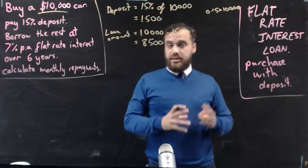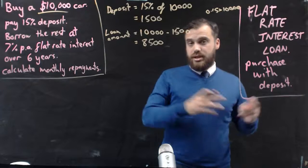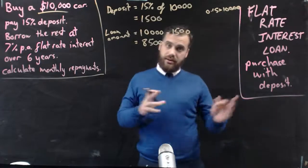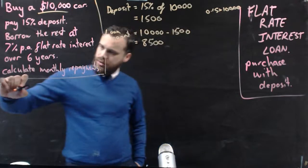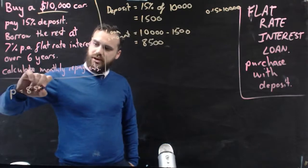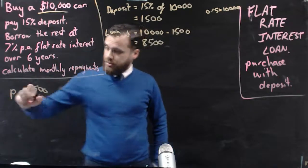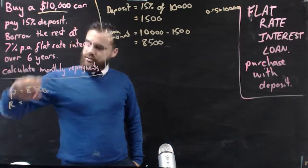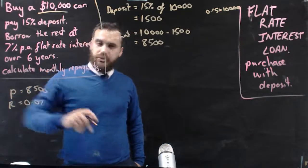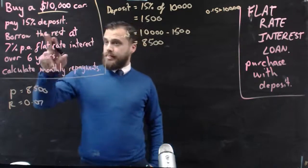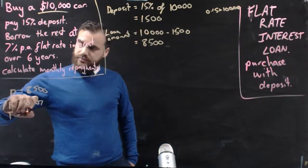Now that's the money that I'm going to borrow, which is our principal. So now I can sort of come up with a bit of stuff. The principal on this loan is $8,500. That's the money that I'm borrowing. The rate on this loan is 7% or 0.07. The time is six years.